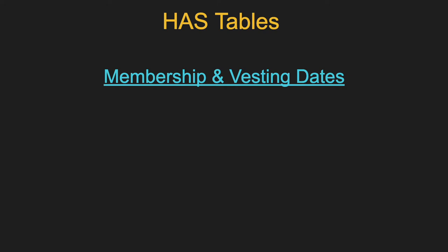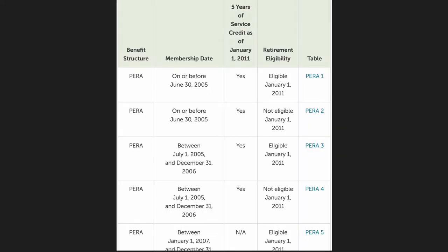There's a hyperlink in the slides that takes you to a page indicating, based on your membership date, when you vested, when you had five years of service, and when you're eligible for retirement, which table you use. This is very important because that table determines what combination of age and service credit you need to retire with either a full benefit or a reduced benefit.